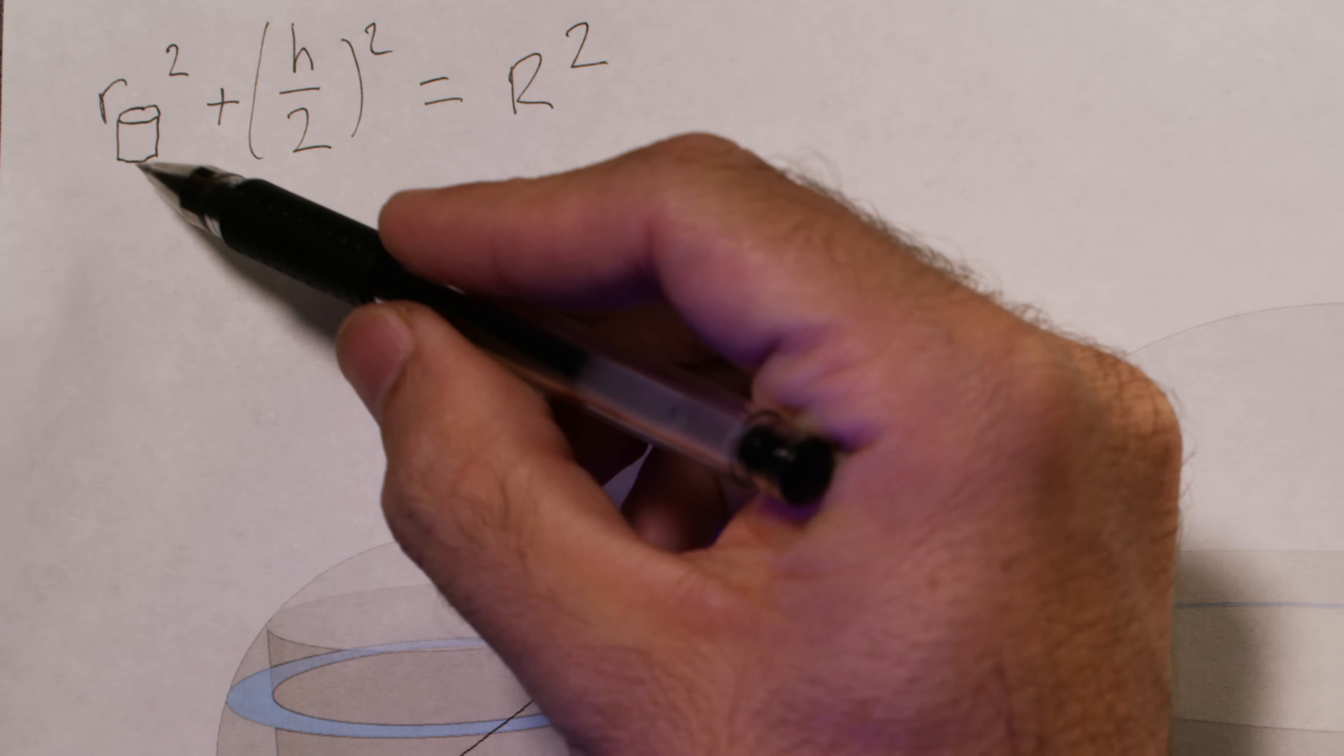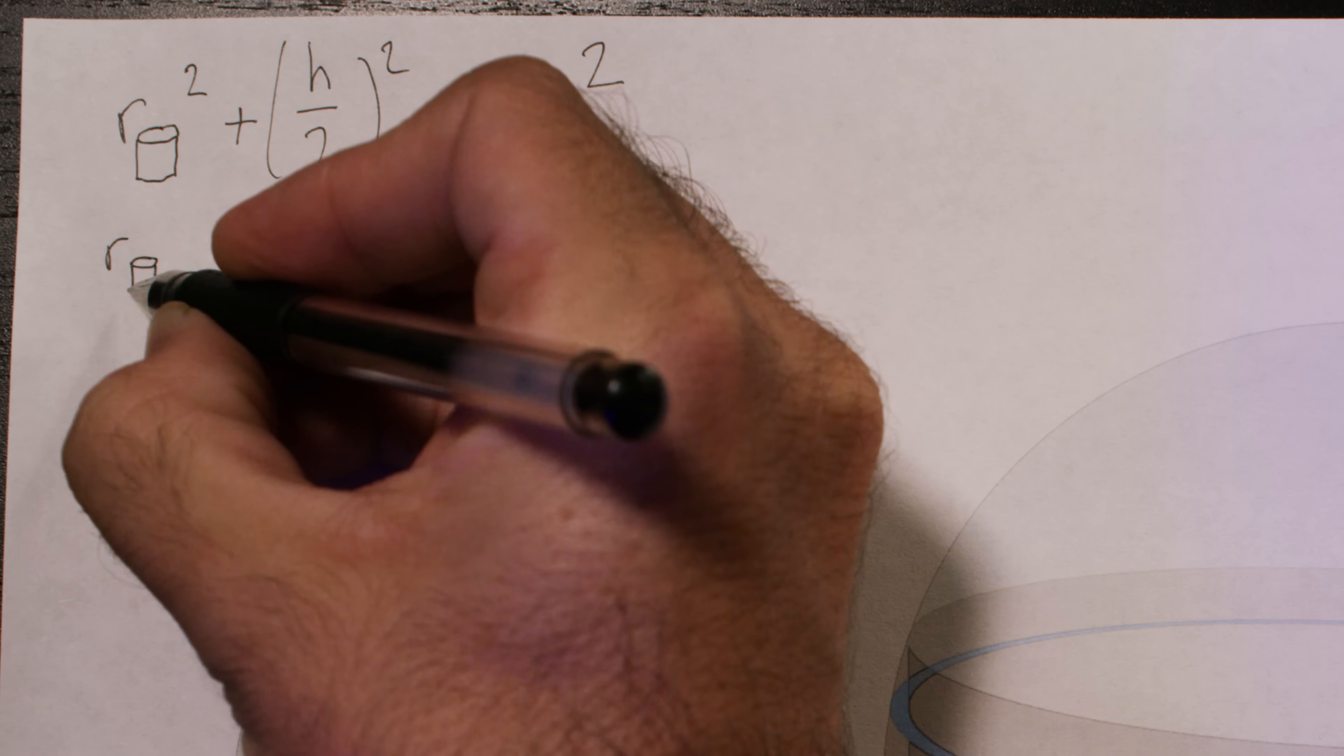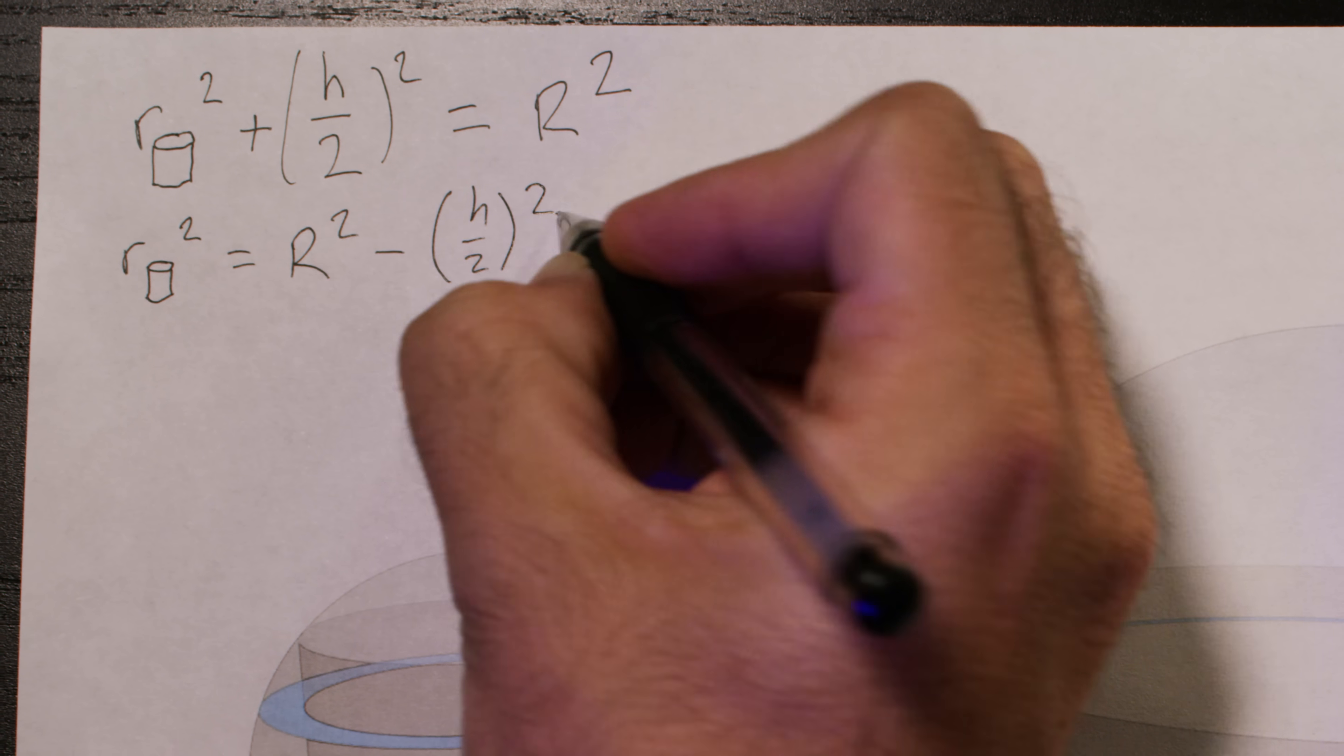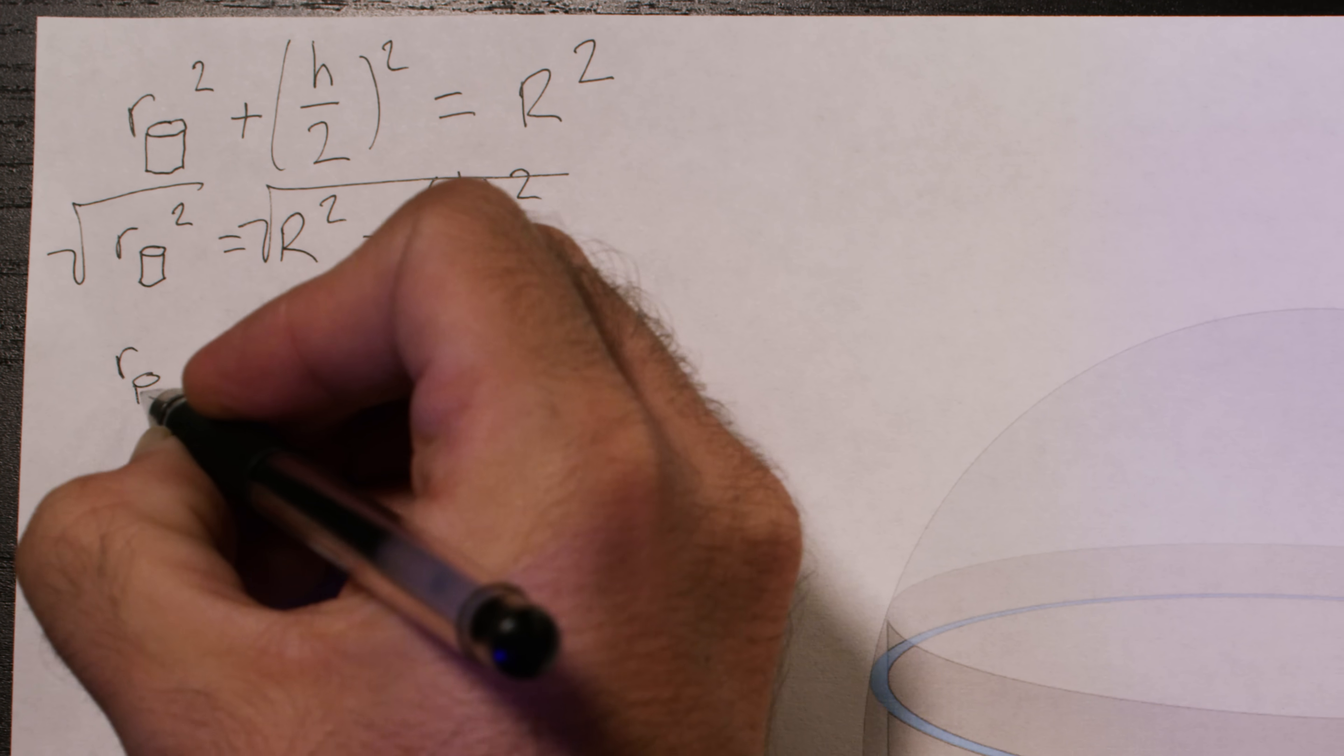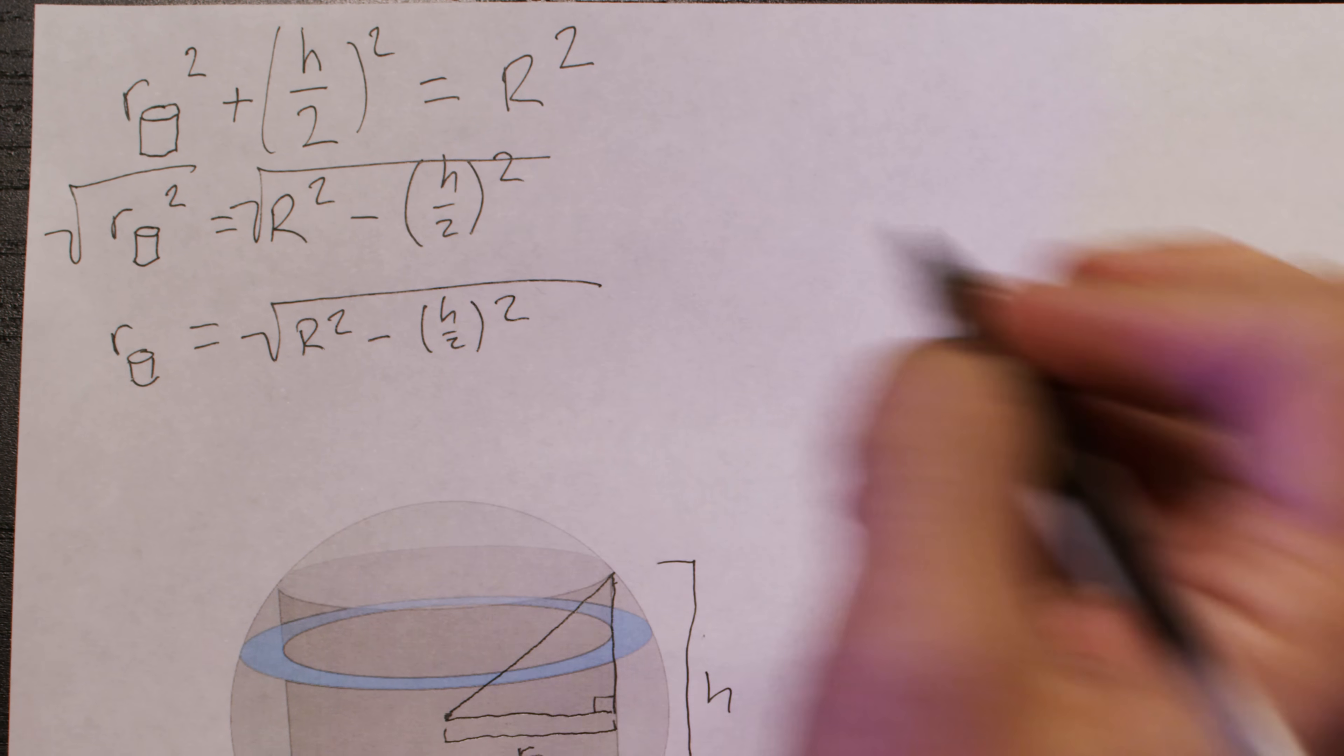Now let's solve for the radius of the cylinder, which is what we want. We'll just subtract h over 2 squared from both sides. That'll give us the radius of the cylinder squared equaling the radius of the sphere squared minus half the height of the cylinder squared. We can take the square root of both sides so that we wind up with the radius of the cylinder equaling the square root of the radius of the sphere minus half the height of the cylinder squared. Perfect.